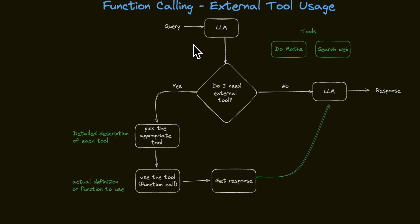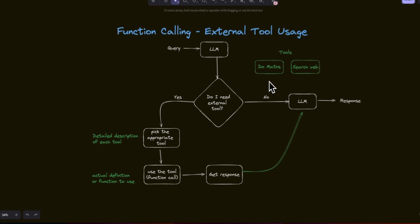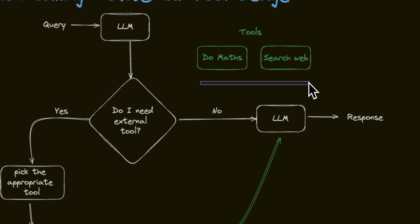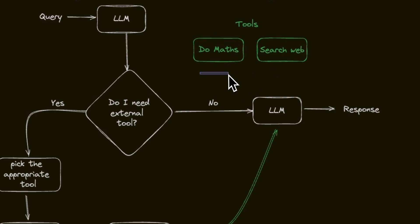With function calling, here is how the flow works. Whenever there's a query from the user, the LLM will look at the available tools and it will decide whether it needs to use a tool or not. If it doesn't need a tool, then it will use its internal training data to generate a response. Now, if it determines that it needs to use a tool — for example, if it has to do certain calculations and it decides that it needs a calculator — then the first phase is that among the available tools, it needs to determine which tool to use. If it was supposed to do calculation, it will pick a calculator. If it's looking for a weather condition, it probably is going to pick a web search.